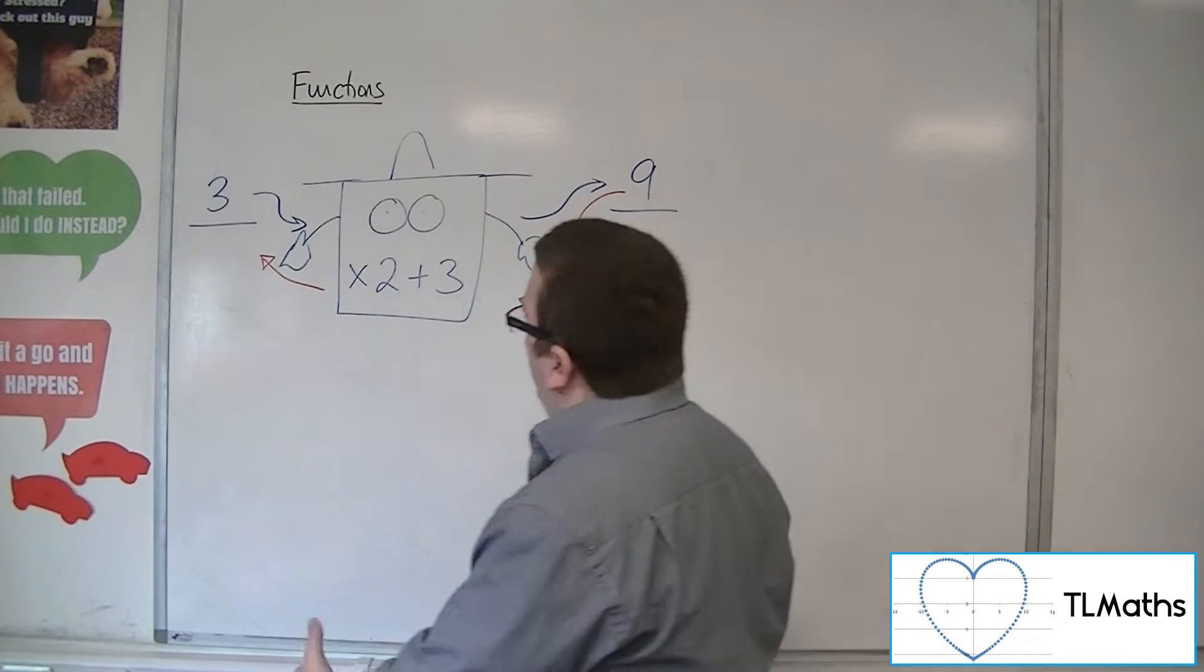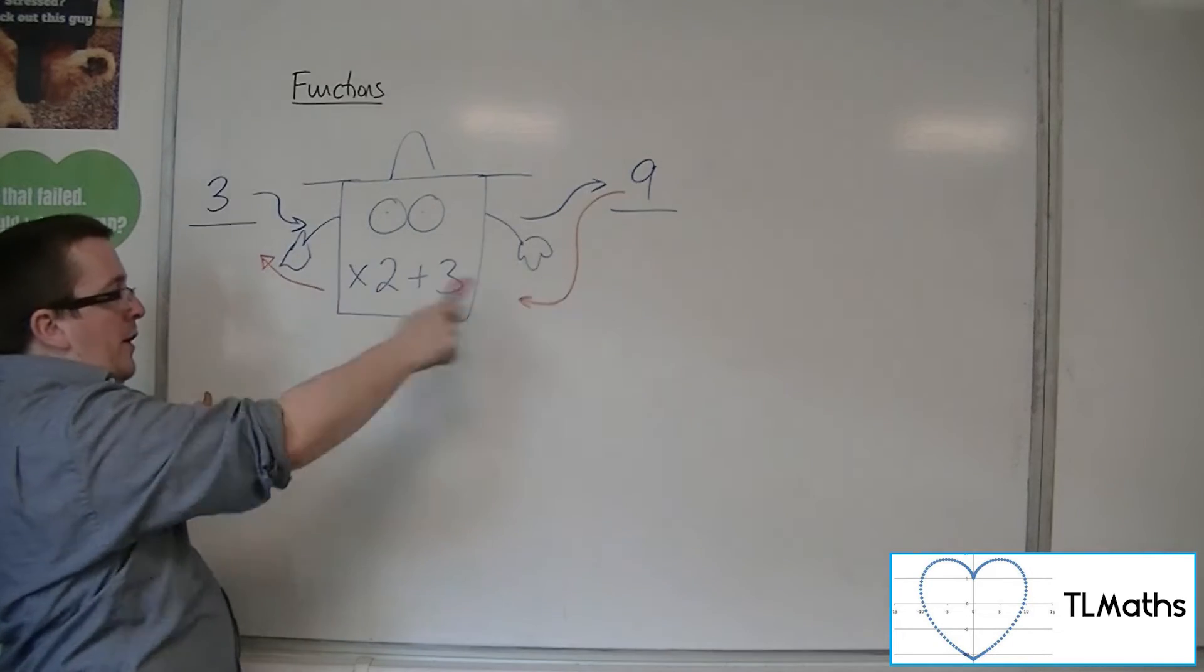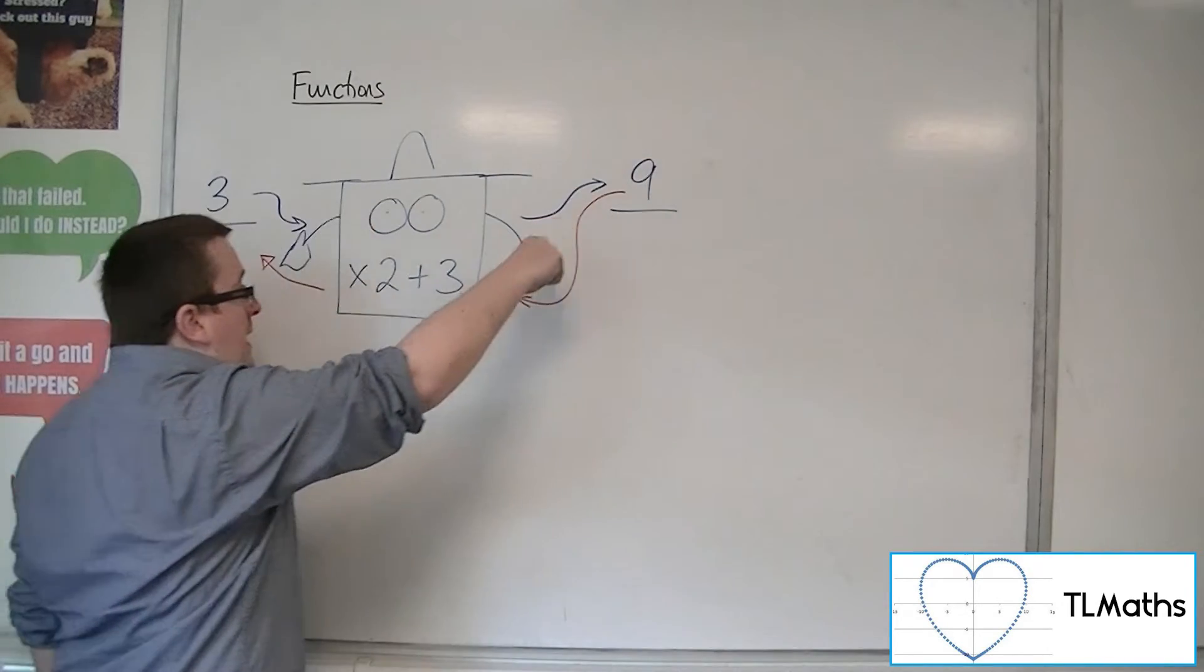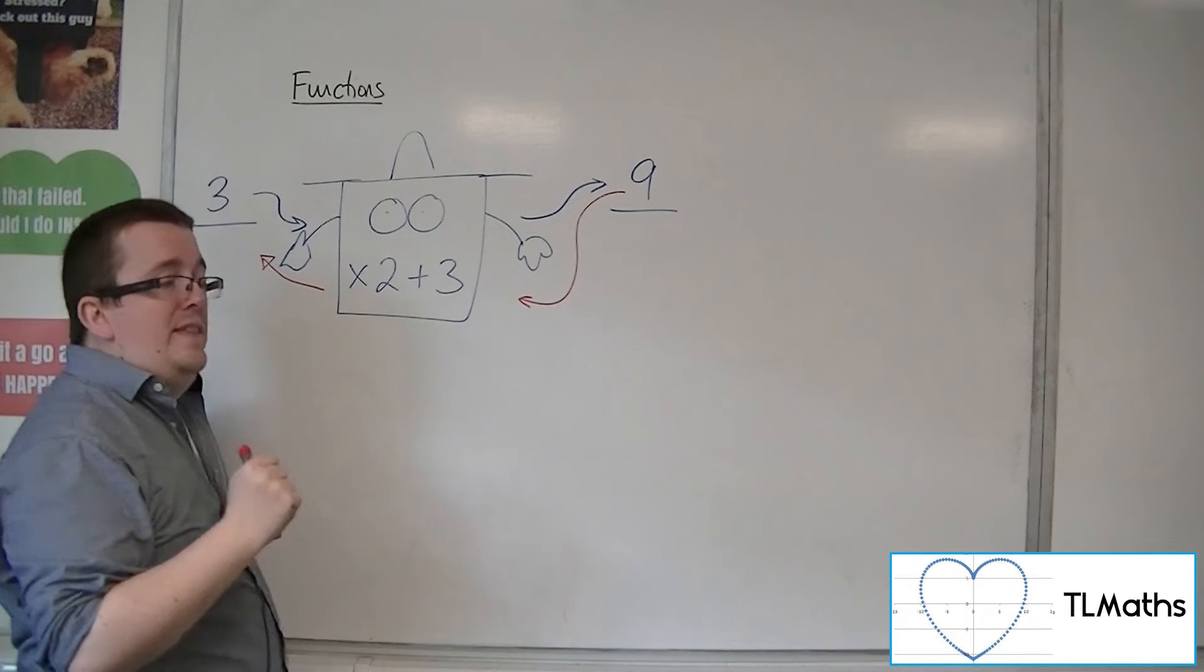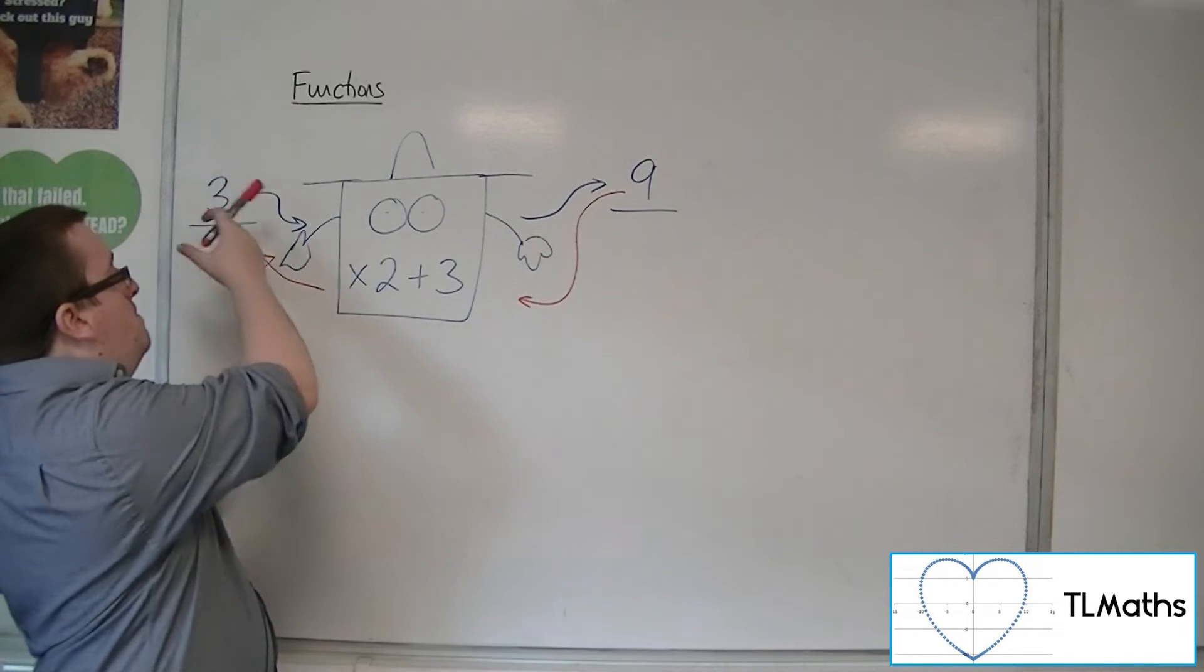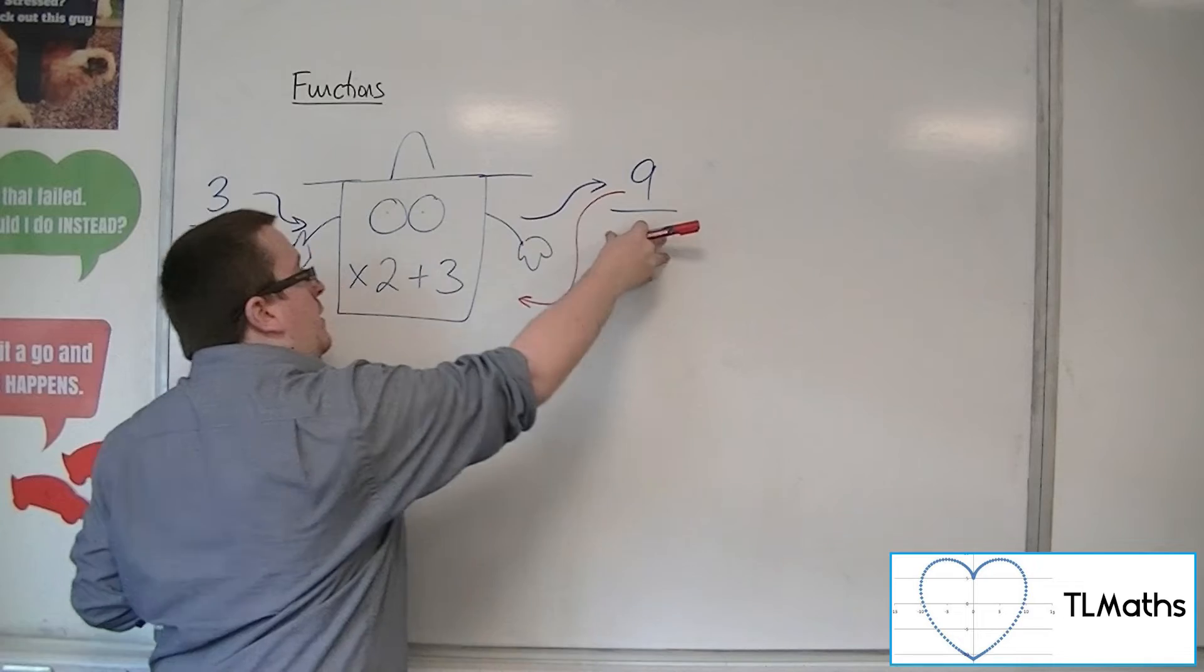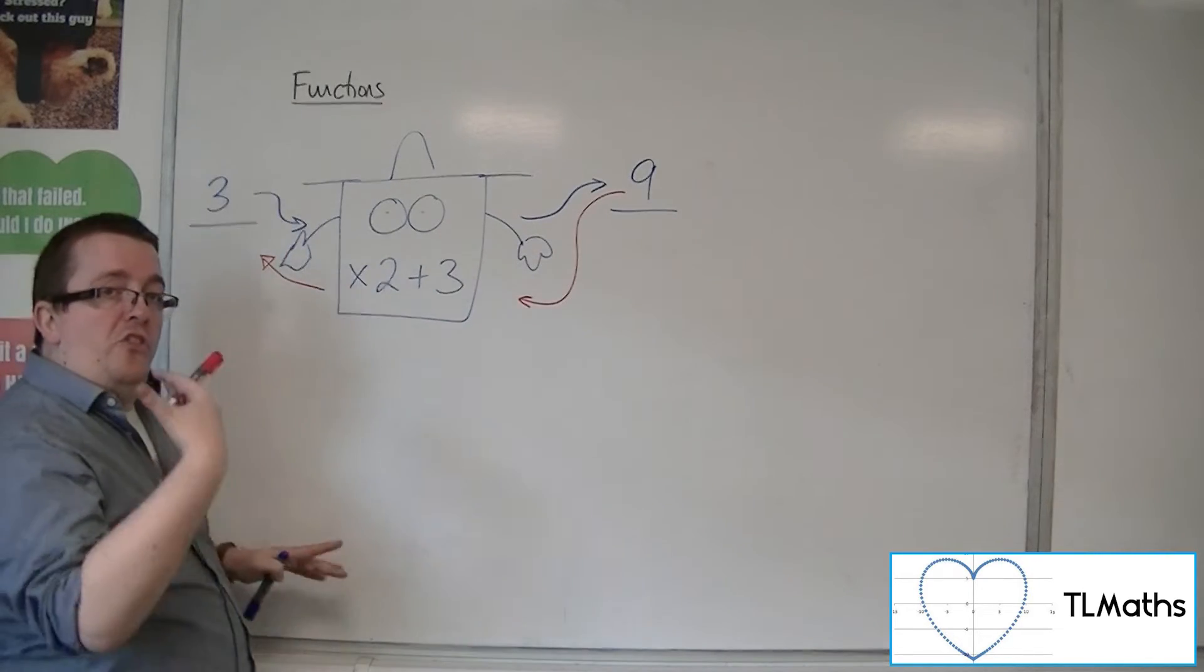Otherwise, if there had been multiple numbers that would get me 9 by passing through this machine, then potentially, by putting 9 back through the machine, by subtracting 3 and then dividing by 2, I could get multiple values of x, and subsequently, I would have 1 going to many, and a 1 to many is not a function.